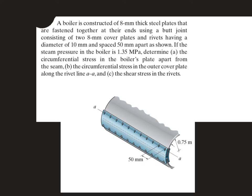The boiler is constructed of 8 mm thick steel plates and they are fastened at their ends using a butt joint. Here we have two cover plates and rivets which are at a spacing of 50 mm. The boiler dimensions are given, and the internal pressure is 1.35 MPa.